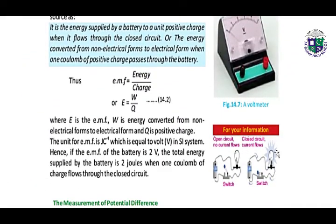Here we have the proper definition which we have to remember. EMF is the energy supplied by a battery to a unit positive charge when it flows through the closed circuit. Or, it is the energy converted from non-electrical forms to electrical forms when one coulomb of positive charge passes through the battery. The formula is E equals W over Q.